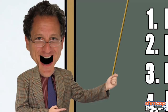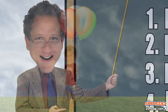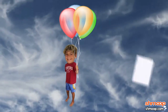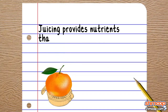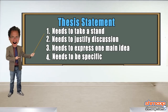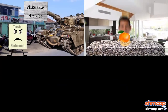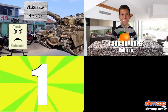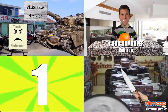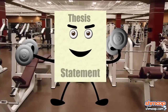Let's go back to that horrible thesis statement about a juicer — it's so dull it wouldn't pop a balloon. What about this one instead? 'Juicing provides nutrients that a person doesn't normally get from their daily meals.' This one meets all four requirements: it takes a stand, it justifies discussion, it expresses one idea, and it's super specific. There's a thesis sentence with a leg to stand on — especially if it's been juicing.